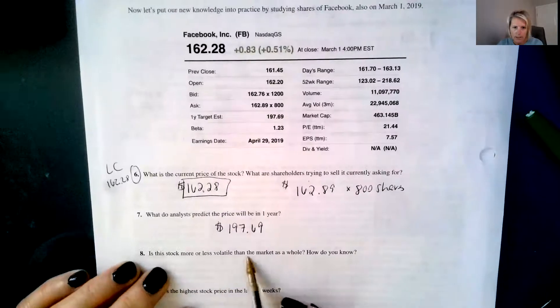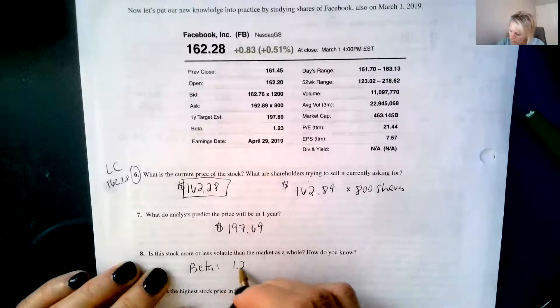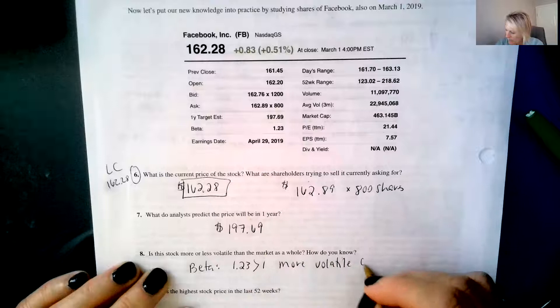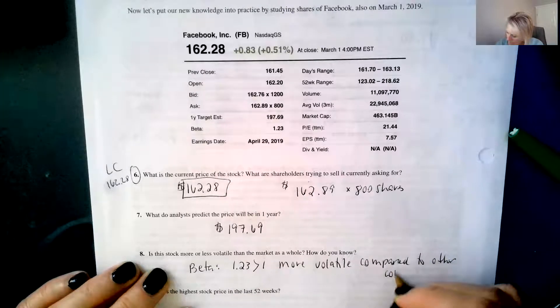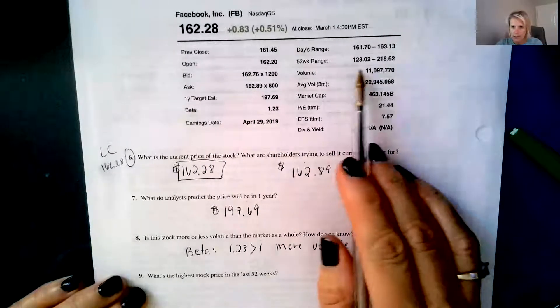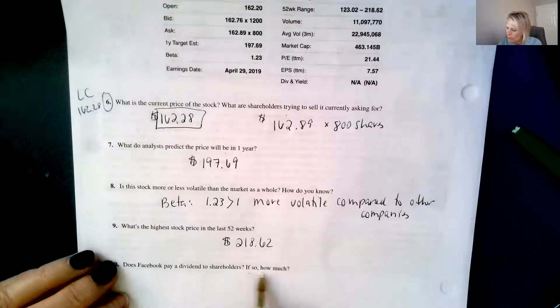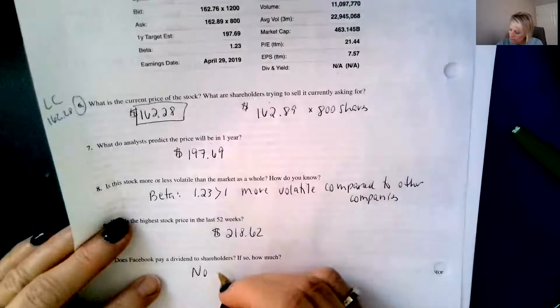Is the stock more or less volatile than the market as a whole? So that's what we look at, the beta. And the beta is 1.23, which is greater than one, which means it's more volatile compared to other companies. What's the highest stock price in the last 52 weeks? So we're going up to the 52-week range and that's the 218.62. And does Facebook pay a dividend to stock shareholders? If so, how much? No. They have a not available. So they do not. No dividend.